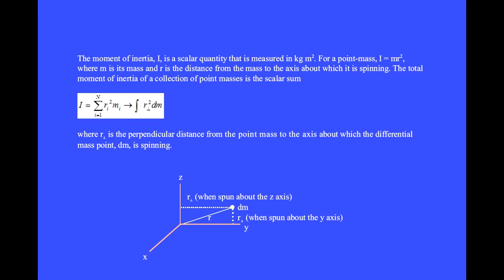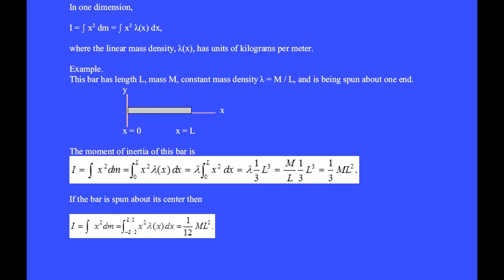To find the moment of inertia of an extended object, we integrate the perpendicular distance squared across the mass dm. In one dimension, we find the moment of inertia by integrating x squared dm, but dm equals lambda dx, so we integrate x squared lambda dx, where the linear mass density lambda of x has units of kilograms per meter.